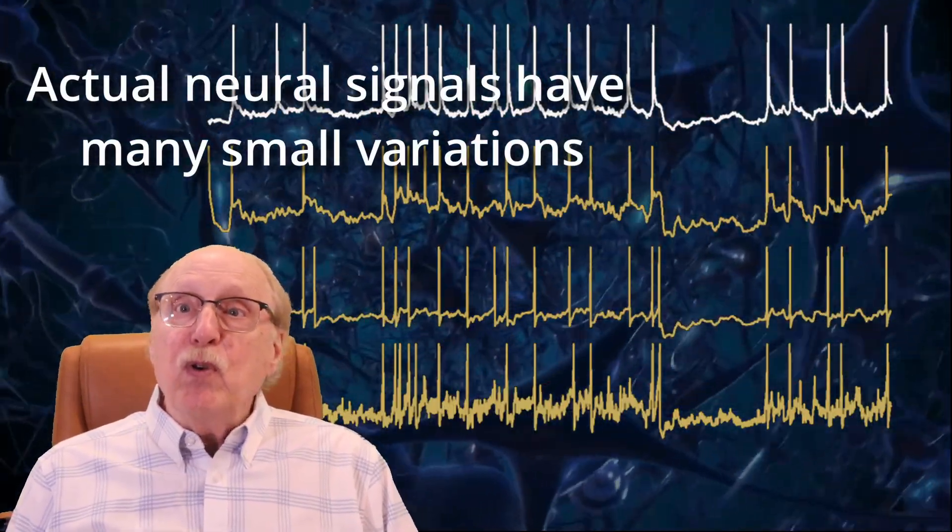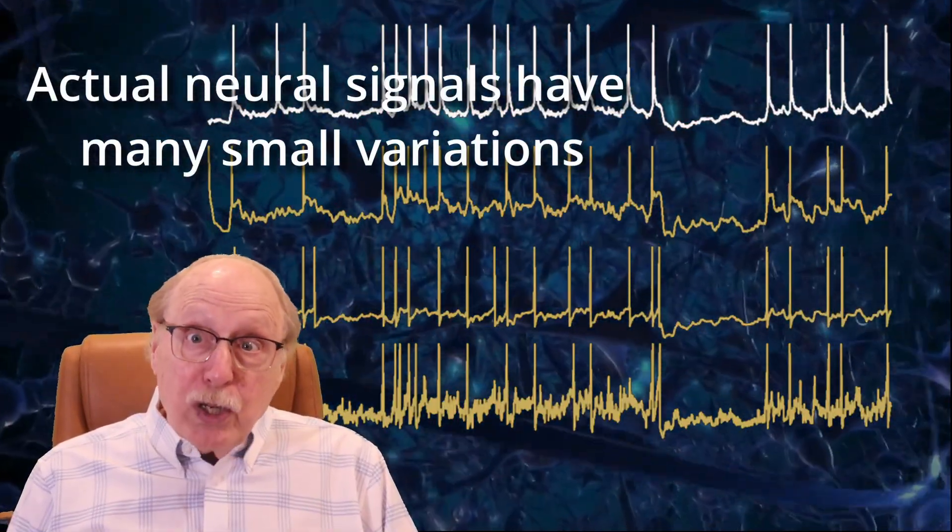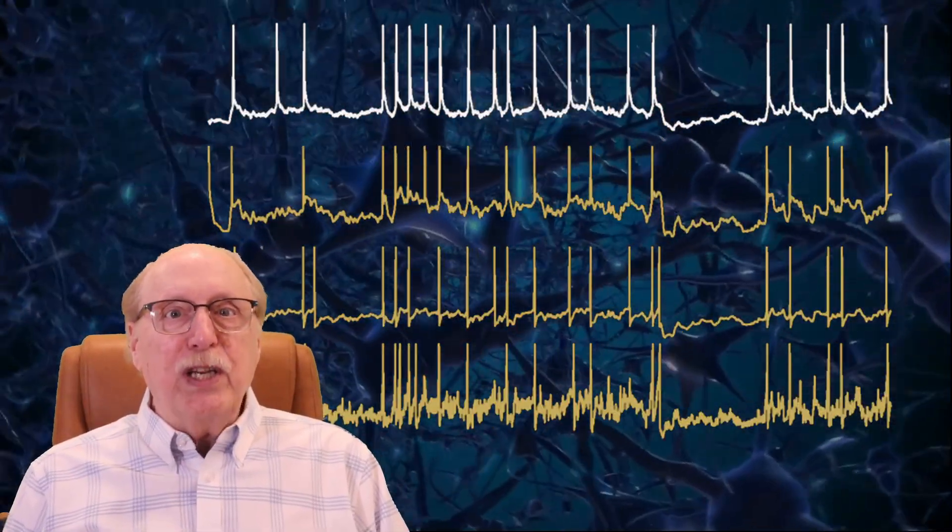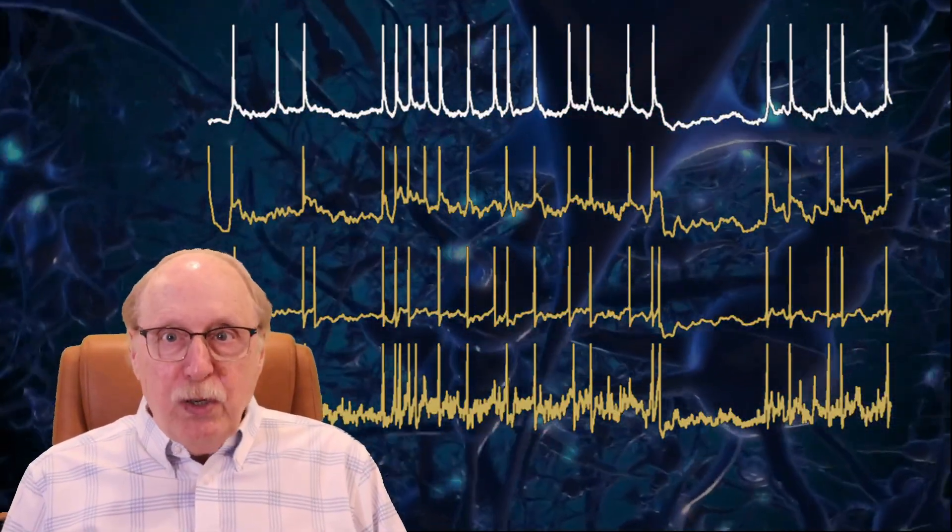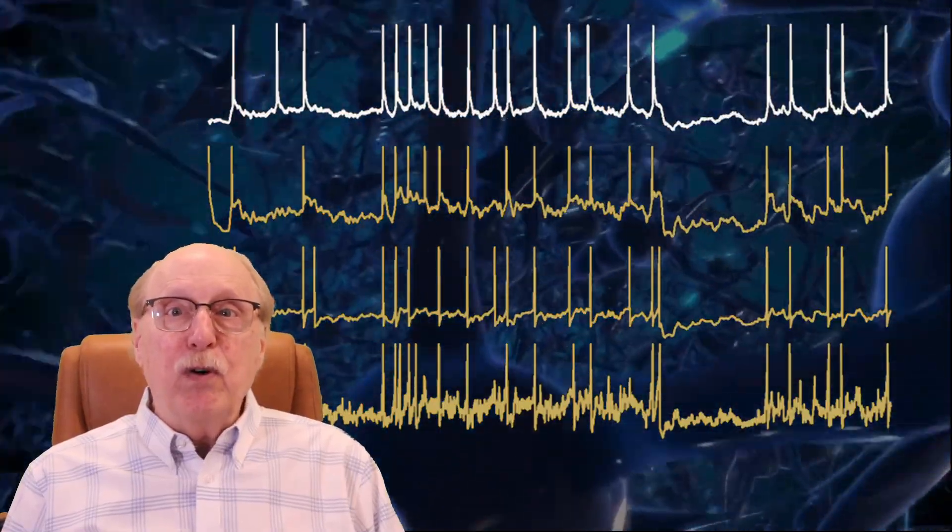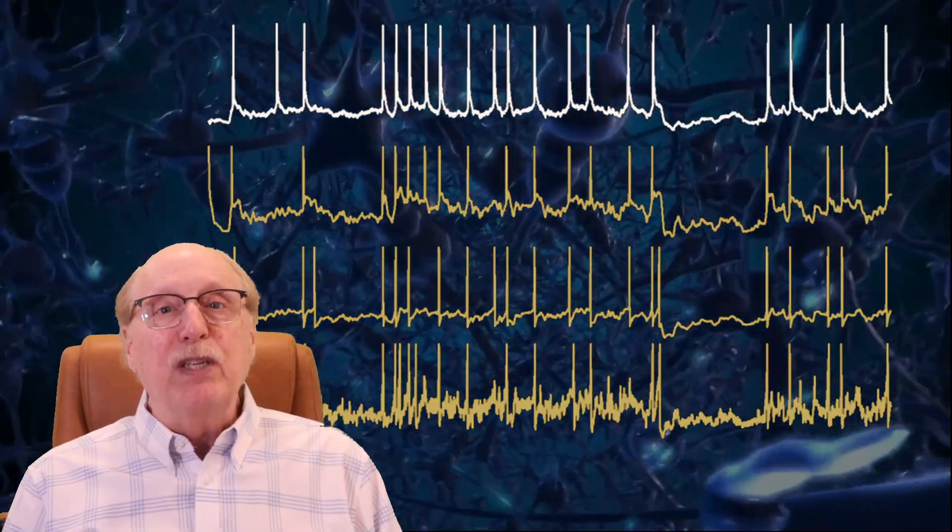As in the computer, these neural spikes are digital. That is to say, minor changes in the spike voltage don't change the amount of neurotransmitter released when the spike reaches a synapse.